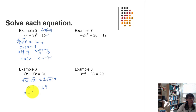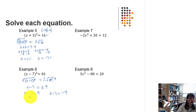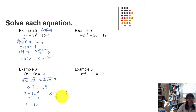We set up two separate equations: x minus 7 equals positive 9, and x minus 7 equals negative 9. Adding 7 to both sides of the first equation gives x equals 16, and adding 7 to each side of the second equation gives x equals negative 2.